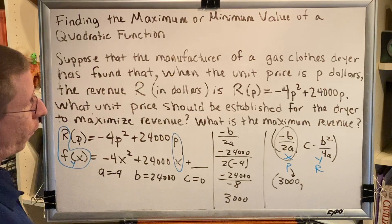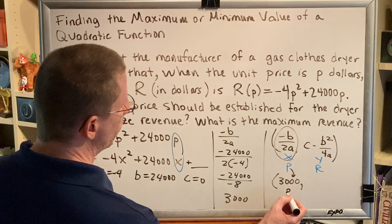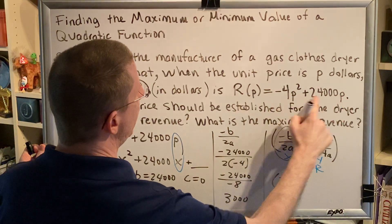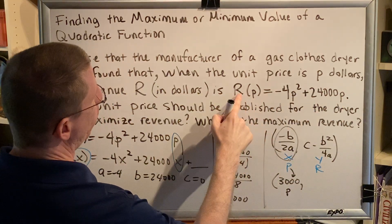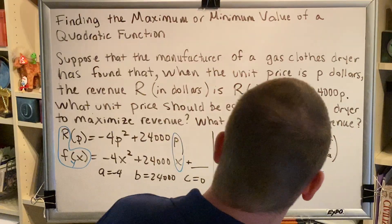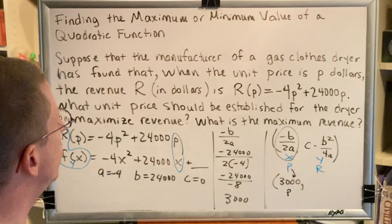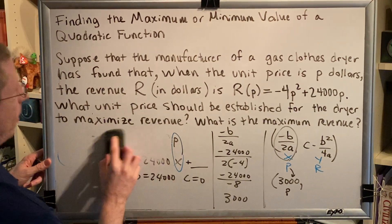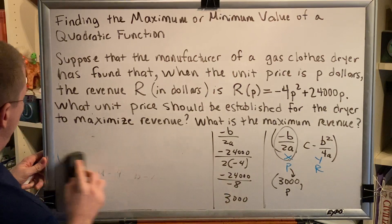Or if we prefer, now that we know that p is 3,000, we can simply plug p is 3,000 into here wherever we see p, and that will tell us r of p or the revenue. Both methods will work. And since in the previous video, I used the c minus b squared over 4a, in this video, I will go ahead and plug in the p equals 3,000 into the equation.